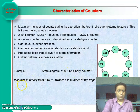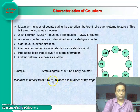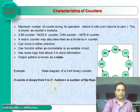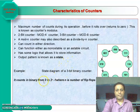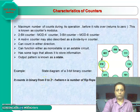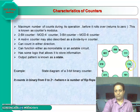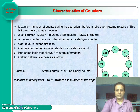The counting sequence of a binary counter is from 0 to 2 raised to the power n minus 1, where n is the number of flip-flops used. For example, with 3 flip-flops, the sequence runs from 0 to 7 (2³ − 1 = 7). The state diagram shows states 0 through 7, and the maximum state reached is 7.